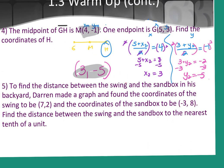All right, number 5 says, to find the distance between the swing and the sandbox in his backyard, Darren made a graph. Darren is such a nerd, by the way. Who makes a graph of their backyard, right? Darren made a graph and found the coordinates of the swing to be (7, 2) and the coordinates of the sandbox to be (-3, 8). Maybe I'll make that a project. You guys have to turn your backyards into graphs. Find the distance between the swing and the sandbox to the nearest tenth of a unit. So lots of words when really all it's asking for is what? The distance between those two points. Don't let the words throw you, okay?